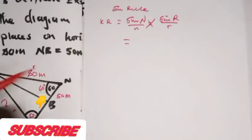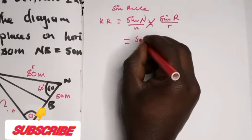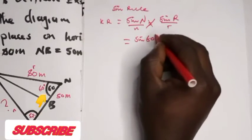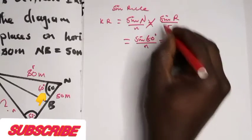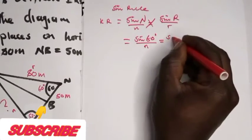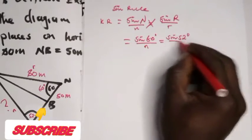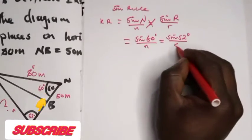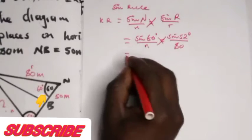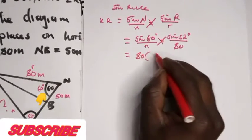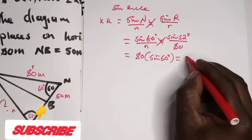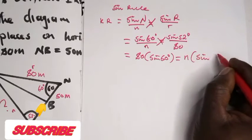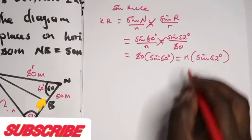Then you cross multiply. For sine N we have 60 degrees. We are looking for the distance N, which equals sine R. Sine R gives us 80 times sine 52 degrees over 80 for the distance of R. So we have 80 meters times sine 60 degrees, which equals N times sine 52 degrees. We are asked to find the value of N, so let's divide both sides by sine 52.